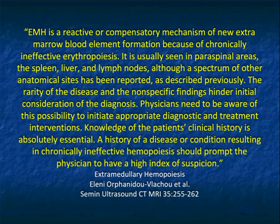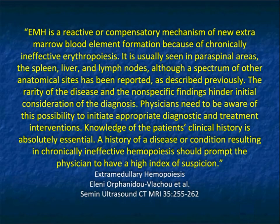Extramedullary hematopoiesis is a reactive or compensatory mechanism of new extra-marrow blood element formation because of chronically ineffective erythropoiesis — it's the body's attempt to fix itself. It occurs in paraspinal areas, the spleen, liver, and lymph nodes, although other anatomic sites including the adrenal have been reported. Physicians need to be aware of the possibility to initiate appropriate diagnostic and treatment interventions.